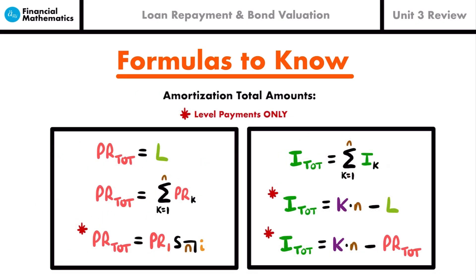Next, we'll look at formulas for calculating total amounts for amortization — specifically the total principal or total interest for a loan. The total amount of principal for a loan equals the original loan amount, since the principal payments in total should pay off the loan. You can also calculate it as the sum of all principal amounts from time 1 to time n: PR_1 + PR_2 + PR_3 and so on.